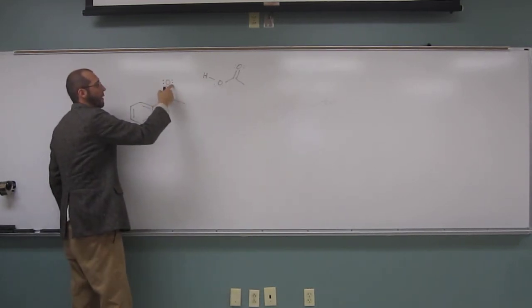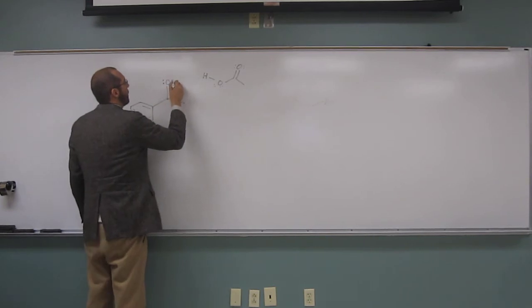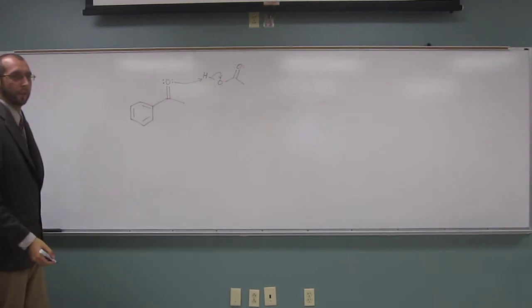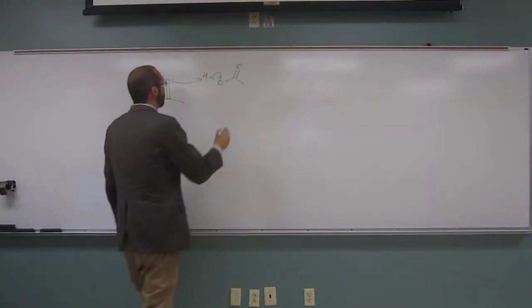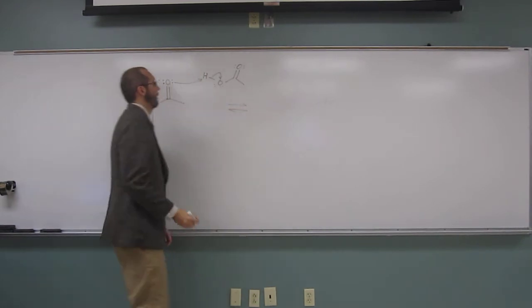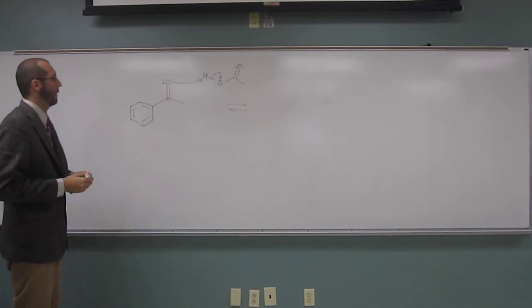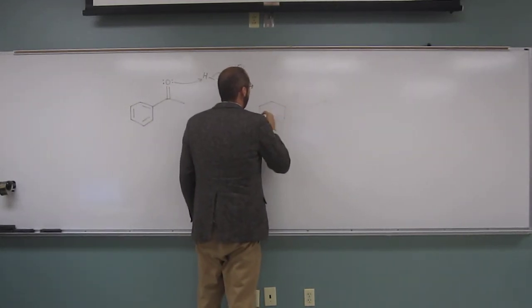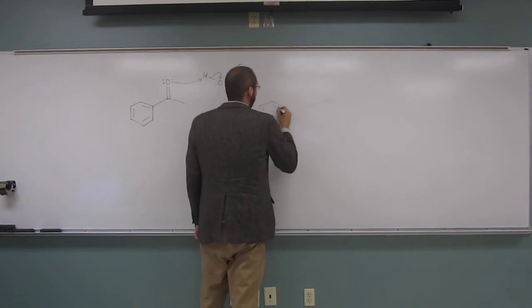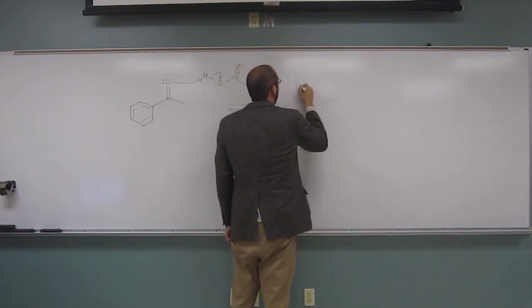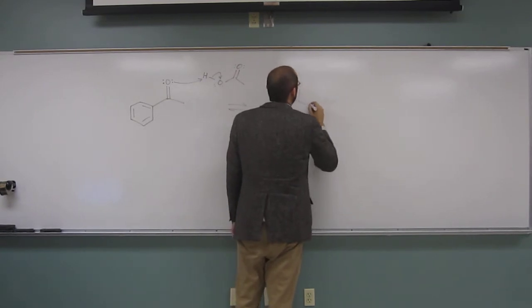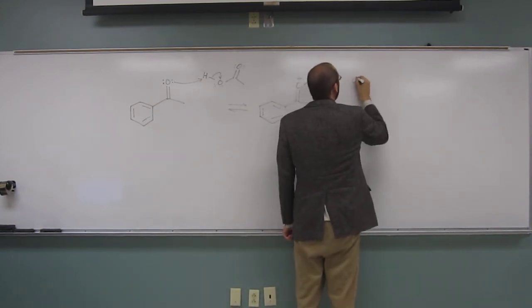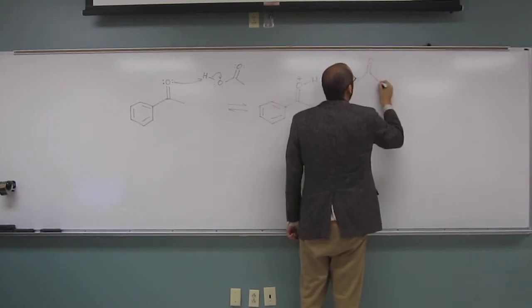Remember, these lone pairs here are slightly basic, and that's what's going to induce the formation of the enolate. So we're going to get something that looks like that. Okay, is that what you wrote down? Okay. So I think this pen might die too, unfortunately. It looks like that.